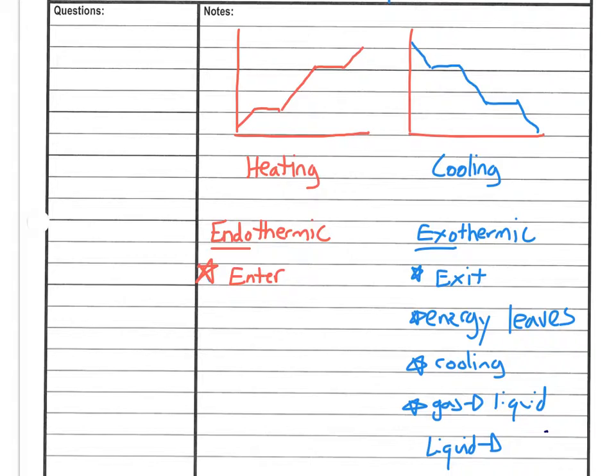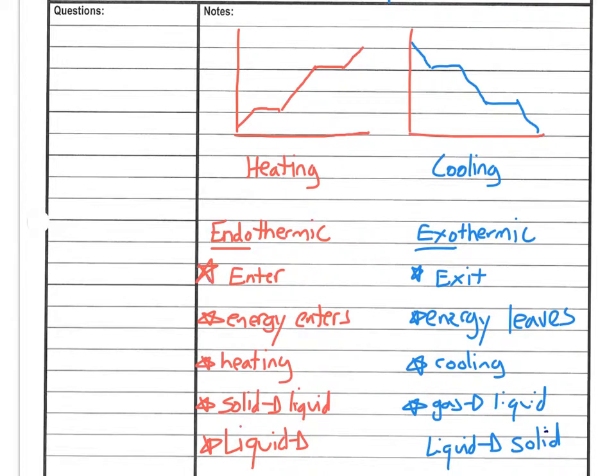On the other side, the endothermic is pretty much the opposite. Instead of energy leaving, energy enters—energy comes in, energy is taken in. Instead of cooling, here we're talking about heating, where we're putting energy into the system, energy is increasing, and the phase changes that go with it are the melting and the boiling. So we've got solid to liquid and liquid to gas. Those would both be endothermic processes because we have to add energy in order for these changes to take place.